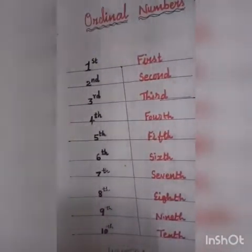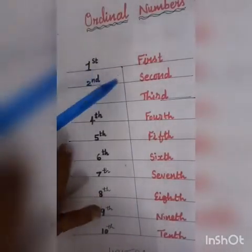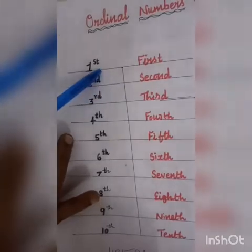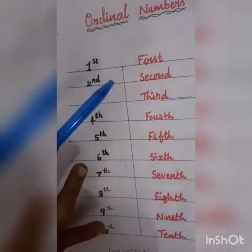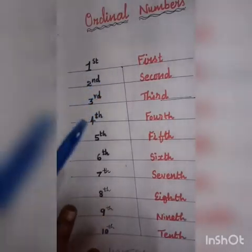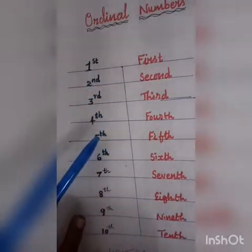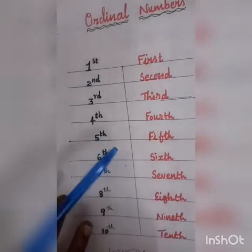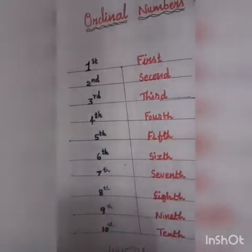That is the ordinal number 1st. So the number is 1 and 1st. Second is spelled S-E-C-O-N-D, so 2 is 2nd. 3 is 3rd, 4 is 4th, 5 is 5th, 6 is 6th, 7 is 7th.